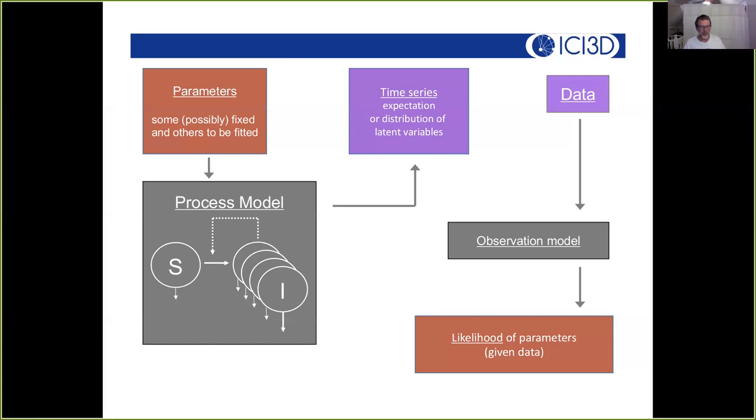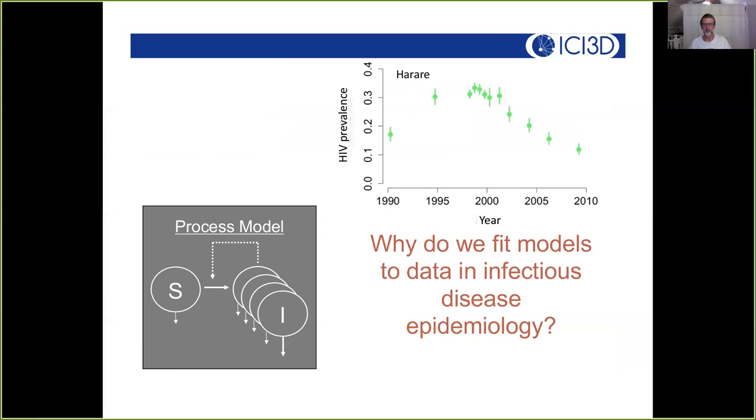So in sum, what we want are parameters that we can put into a process model and ask what we think is going on in a particular system at a particular time. And the likelihood framework gives us a machine to do this. Now is a time when I would ordinarily pause for questions. And so if you have any questions now, this might be a time for you to pause and write them down. Or if you want to go get yourself a cup of tea, this might be a good time to get yourself a cup of tea.